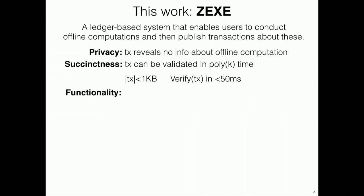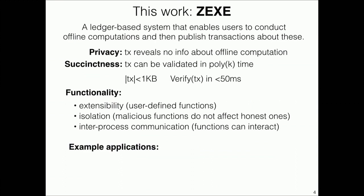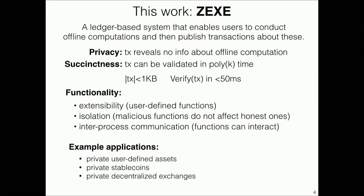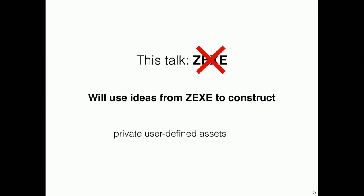From a functionality perspective, we can support arbitrary user-defined functions while isolating malicious functions from honest ones, and allowing these functions to communicate securely. We also show how to apply the system to construct example applications such as private user-defined assets, private stablecoins, and private decentralized exchanges. In this talk, I'll focus on two applications: private user-defined assets and private decentralized exchanges.